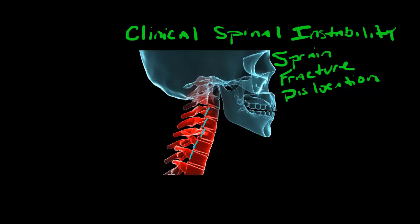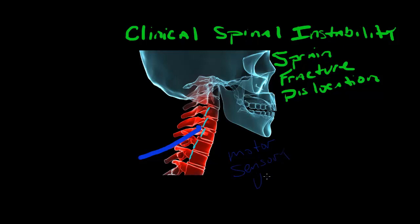We have the spinal cord coming down through the spinal canal, and we also have spinal nerves exiting between each one of these openings. Looking at one of these openings, we would see a nerve coming out. That nerve is involved with motor, sensory, and visceral control.